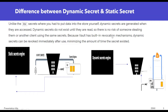Unlike the KV secret where you had to put data into the store yourself, dynamic secrets are generated when they are accessed. Dynamic secrets do not exist until they are read, so there is no risk of someone stealing them or another client using the same secret. This is one of the biggest advantages over static secrets, and that's why we should use dynamic secrets — since by nature a new access key and secret key is generated on each and every request, this makes it much stronger and robust.